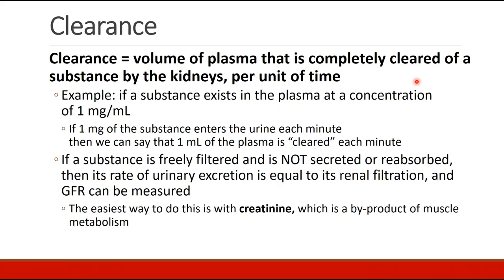The next topic is clearance, defined as the volume of plasma that is completely cleared of a substance by the kidneys per unit of time. This is a theoretical concept — plasma is not completely cleared in one pass, but rather partially cleared and recycled repeatedly. If a substance exists in plasma at a concentration of one milligram per milliliter and one milligram enters the urine each minute, it is as if one milliliter of plasma is completely cleared each minute. If a substance is freely filtered and neither secreted nor reabsorbed, its rate of urinary excretion equals its renal filtration — making clearance a great way to measure GFR.